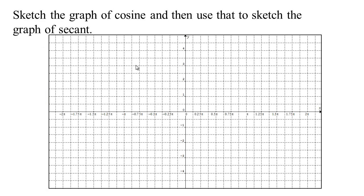Let's look at graphing the secant. Remember, the secant of an angle is one over the cosine. So in order to graph the secant we can start with the graph of cosine and then use the principle that a regular size number divided by a tiny number is large. The cosine of 0 is 1, the cosine of π/2 is 0, the cosine of π is -1, the cosine of 3π/2 is 0, and the cosine of 2π is back up to 1. And this picture goes in the other direction too.